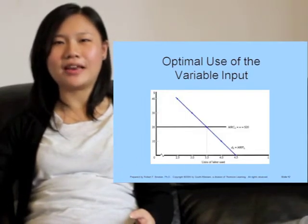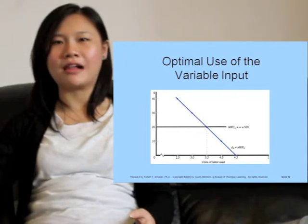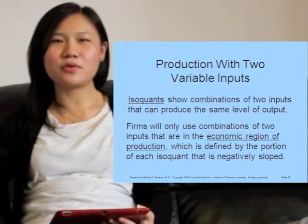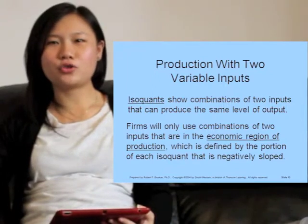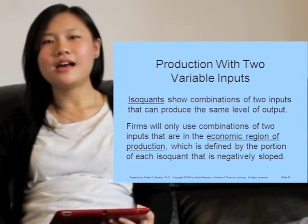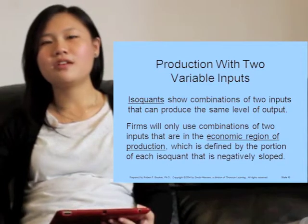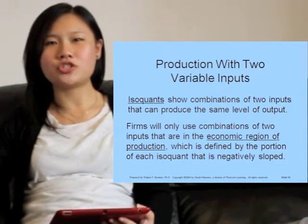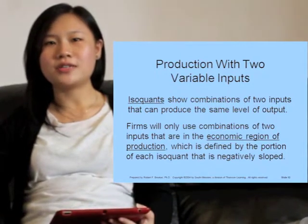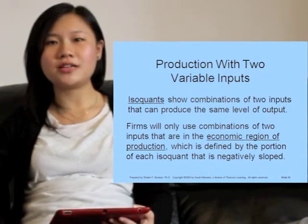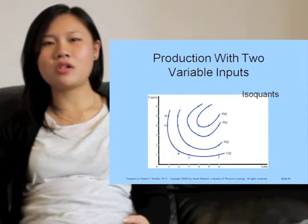The intersection point between MRPL and MRCL describes the optimal use of labor. To examine the production function when there are two variable inputs, we can use isoquants. Isoquants show combinations of two inputs that can produce the same level of output. Firms will only use combinations of two inputs that are in the economic region of production, which is defined by the portion of each isoquant that is negatively sloped.